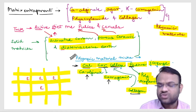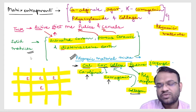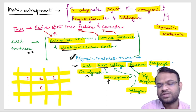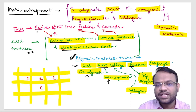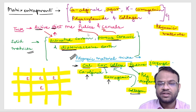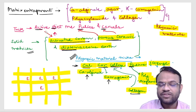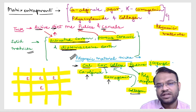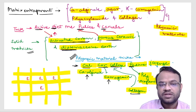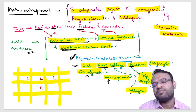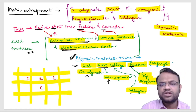Now let us talk about solid matrices. The materials used for solid matrices are activated carbon, porous ceramics, and diatomaceous earth. The trick here is: 'Active diet may pulses and cereals' — Active for activated carbon, Diet with D for diatomaceous earth, and P for porous ceramics. You can remember porous ceramics with pulses or ceramics directly. These were the tricks for solid matrices.